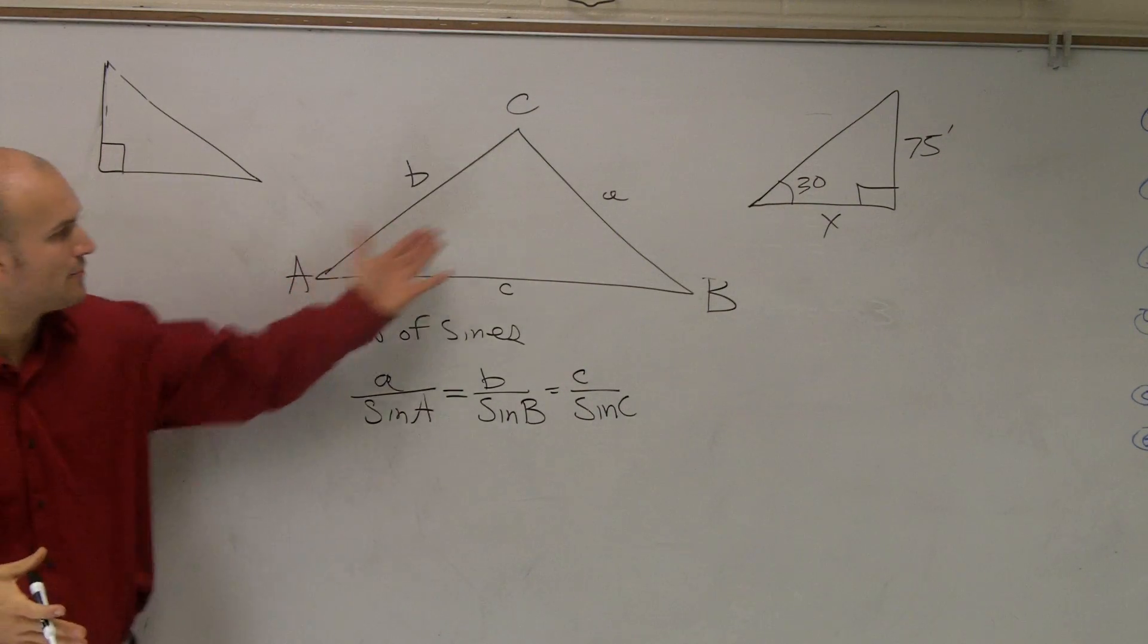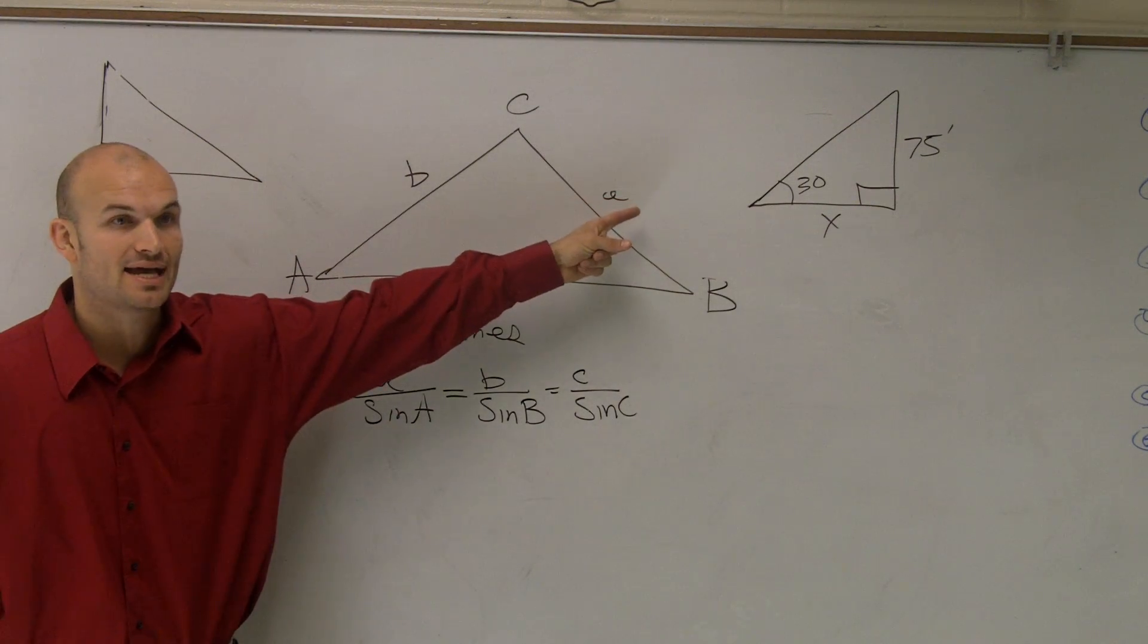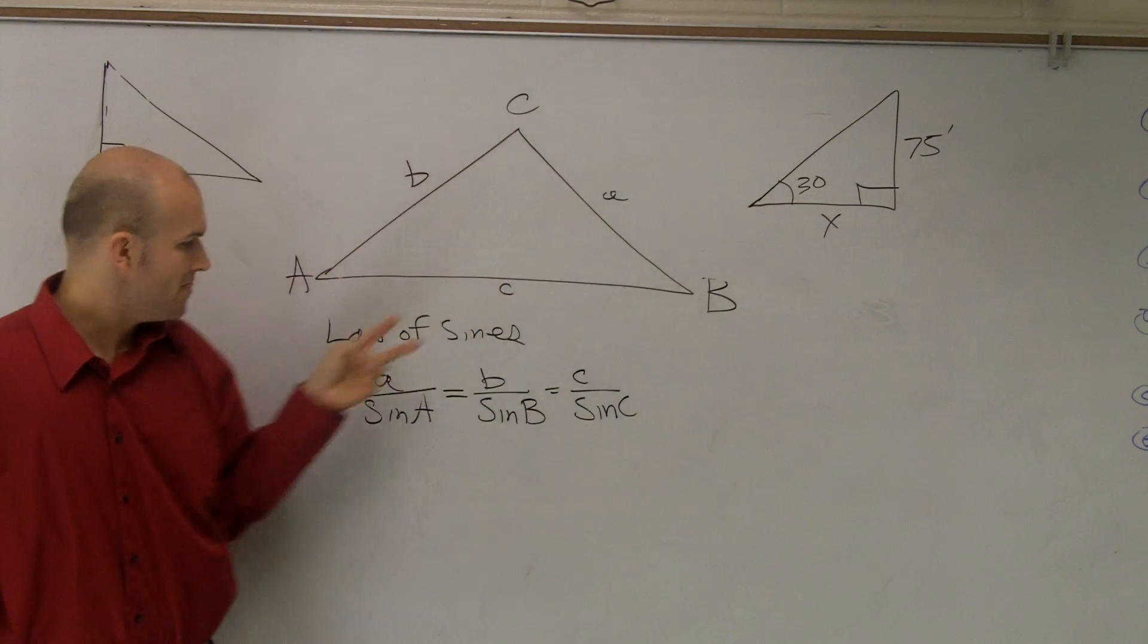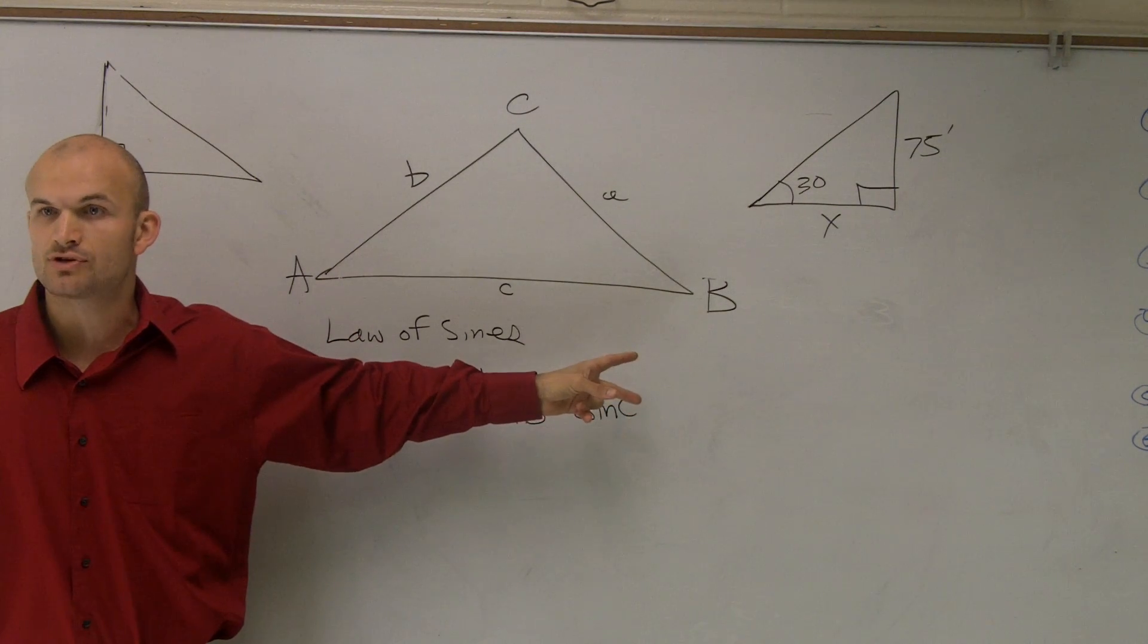So all they're saying is that ratio between the sine of an angle and its length, sorry, the length of its side, we kind of say here's the ratio. That relationship, that ratio is equal for all the sides and angles of a triangle. Make sense?